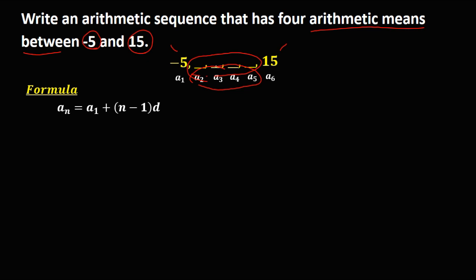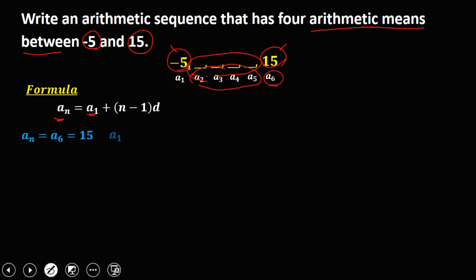Now a sub n is the last term. Our last term is a sub 6, and a sub 6 is equal to 15, so a sub n is 15. Then a sub 1, the first term, is negative 5. Since a sub n equals a sub 6, n is 6. The common difference d is the unknown, so we need to solve for it first to find a sub 2, a sub 3, a sub 4, and a sub 5.